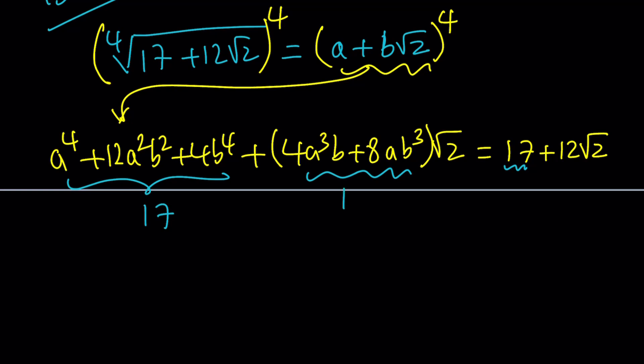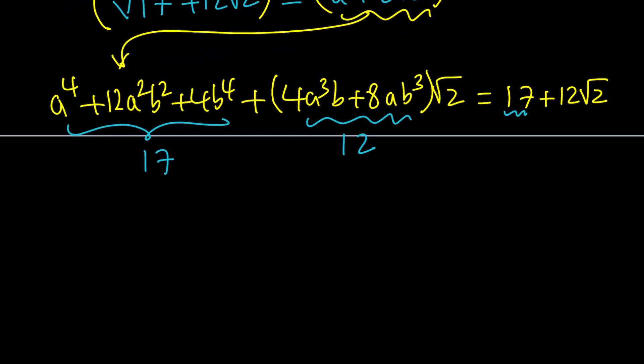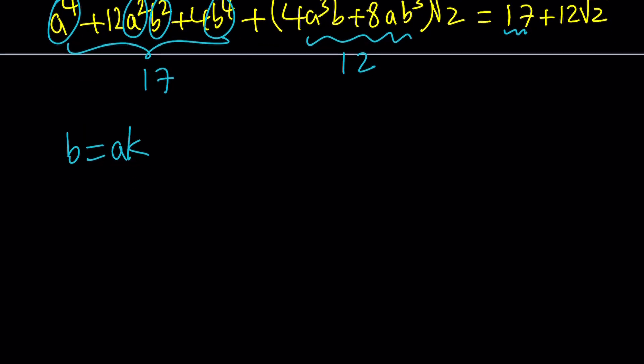This one is going to be 12, this one is going to be 17. That gives us a system. And to solve this system, since this is a homogeneous system, we can do the following. Why is this homogeneous? Notice that the sum of the powers is 4. It's 4 here, it's 4 here. Everywhere, it's 4, pretty much. So I can replace b with something like a times k. You can use any variable you want.